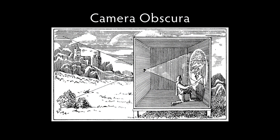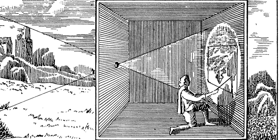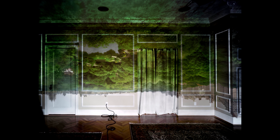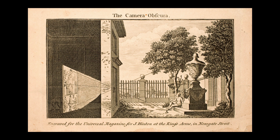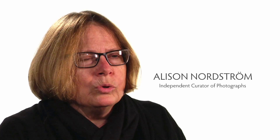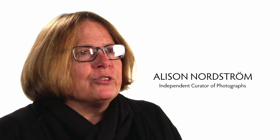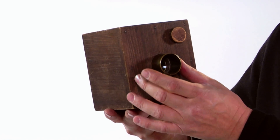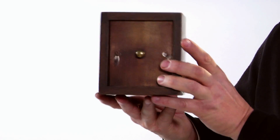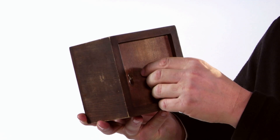Camera obscura means dark room. It's a room with no light in it. If you have a room with no light and you poke a little hole in the side of that room and let light in from the outside, by miracle you'll have an image projected upside down, turned around, but in color and moving on the other side of the wall. It's a phenomenon that people have been aware of for thousands and thousands of years, and it's very often the first project taught in photography classes to get people to understand the simplicity of what the camera is.